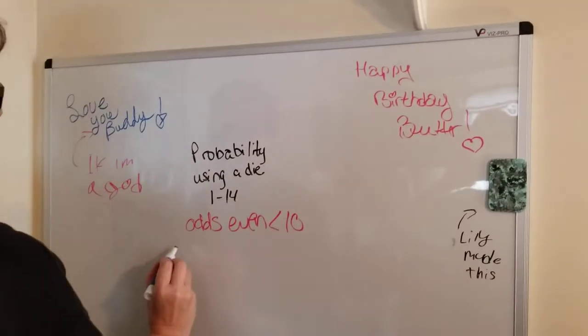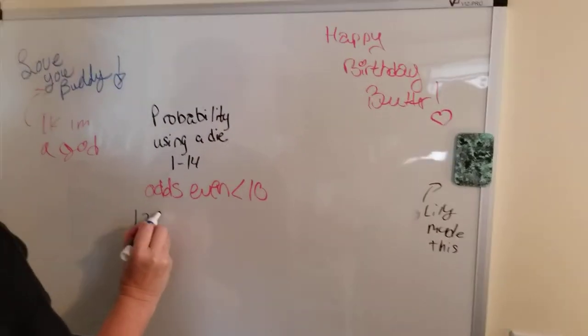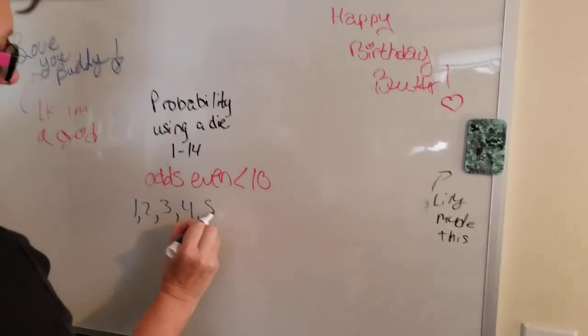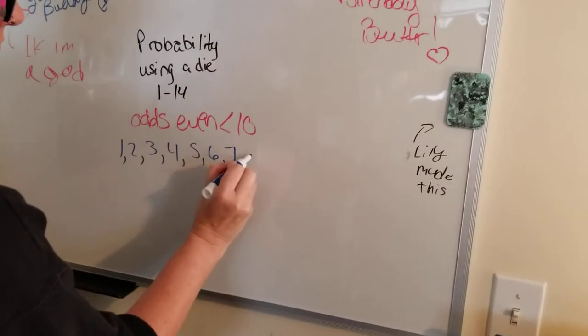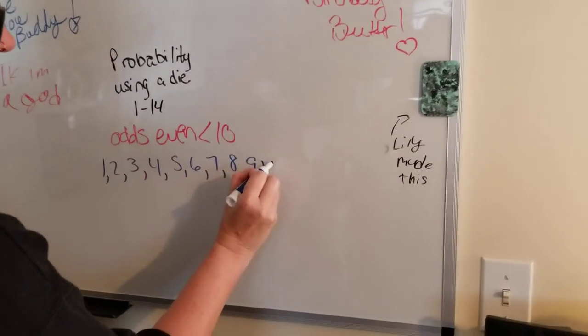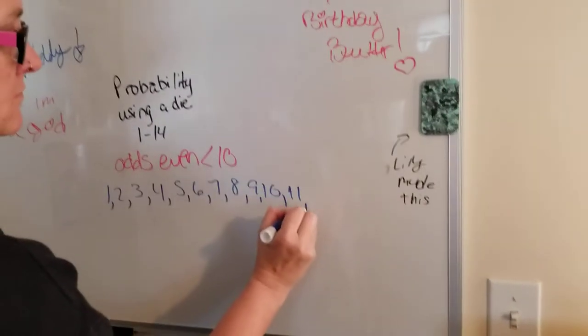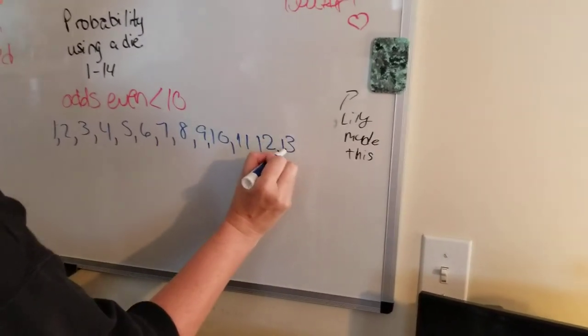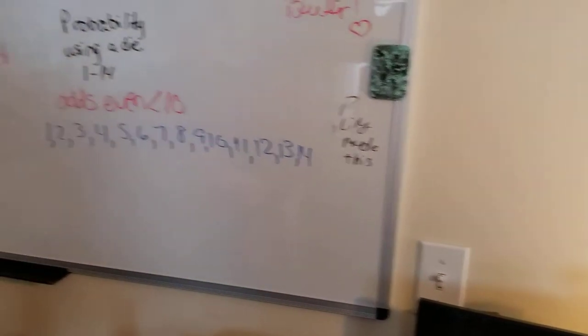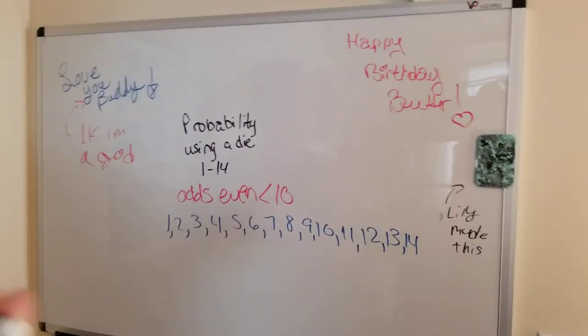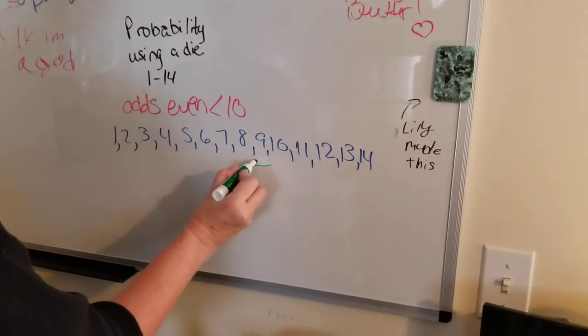First, you can count out your die, 1 through 14. Then, we know it's going to be less than 10.